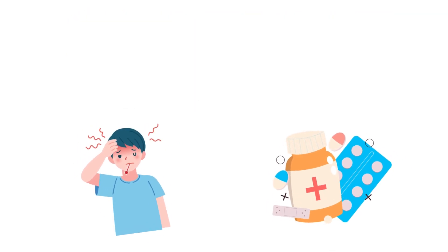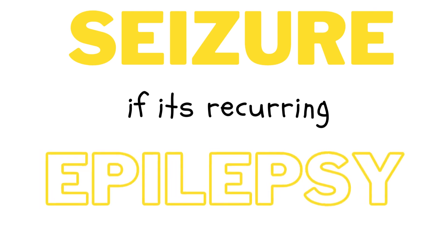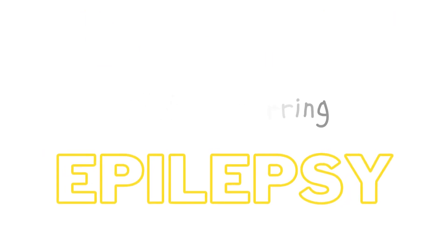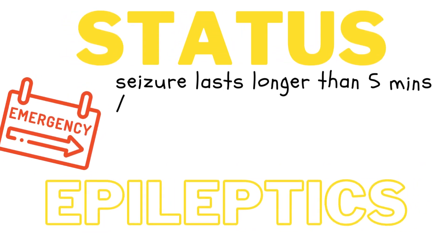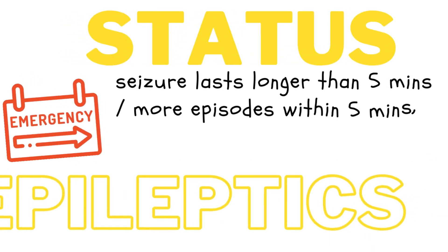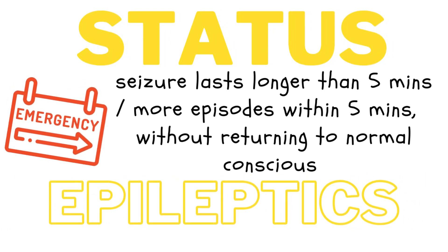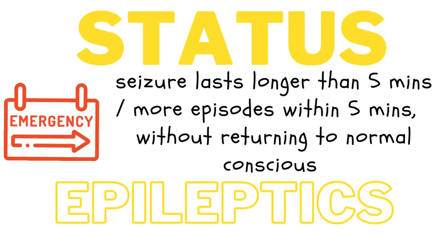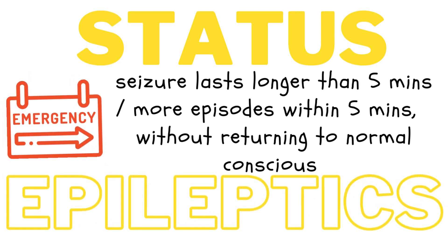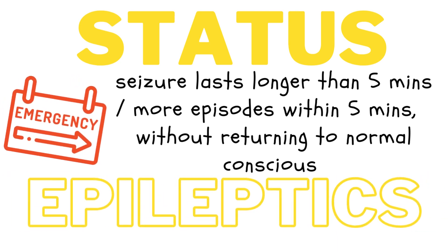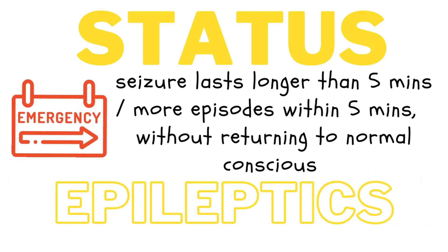When a person has recurring seizures, we define it as epilepsy. Status epilepticus is a seizure that lasts longer than 5 minutes, or having more than one seizure within a 5-minute period without returning to a normal level of consciousness between episodes. It is a medical emergency since it may lead to permanent brain damage or death.